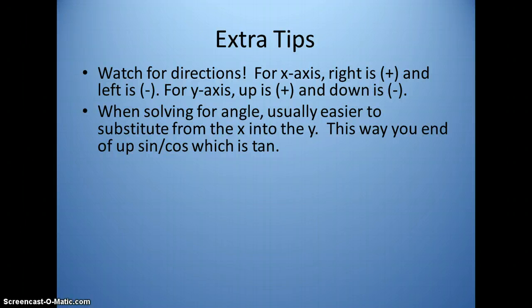When solving for the angle, it's usually easier to substitute from the X into the Y. And this way you'll end up with sine over cosine, which is tangent. If you do it the other way, you end up with cosine over sine, which is cotangent. And some people mess up the math there when that happens.